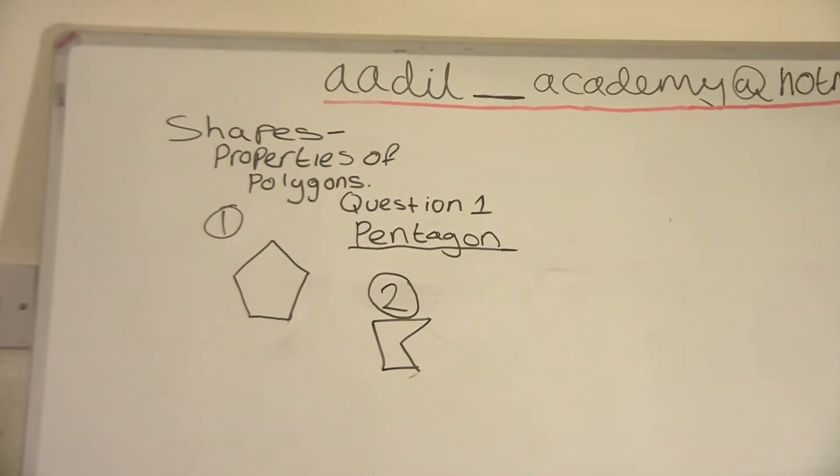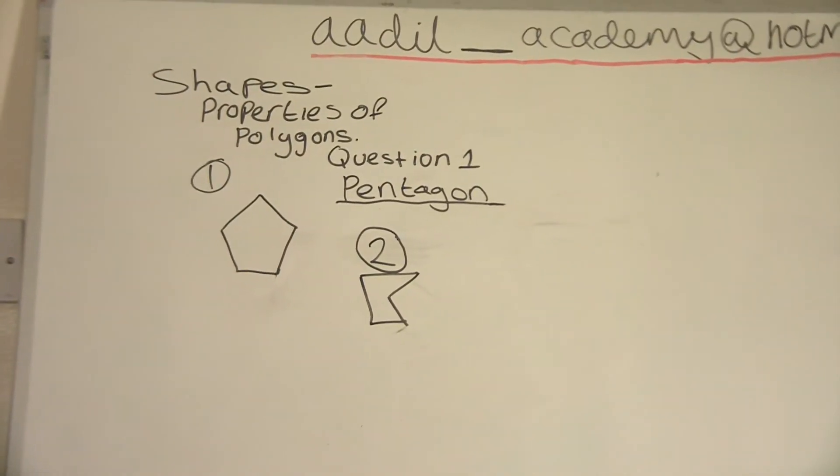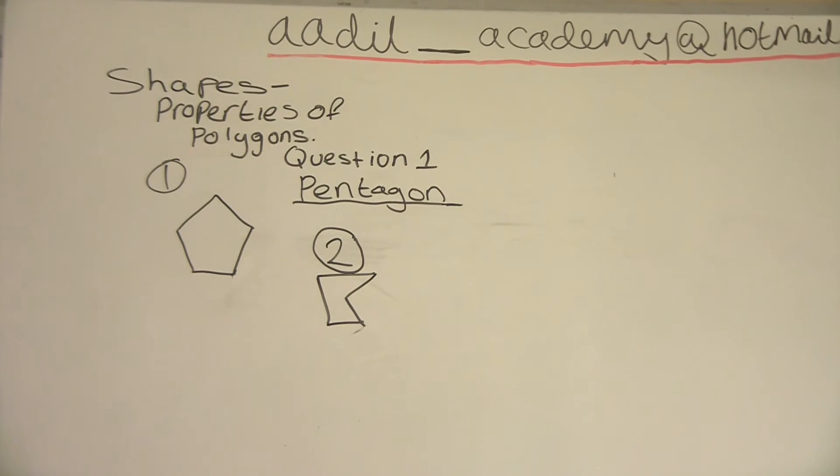five sides, and a regular pentagon has five sides of equal lengths. The interior angles of a pentagon